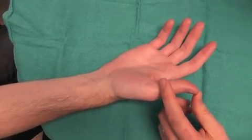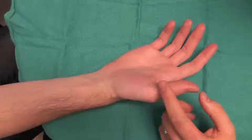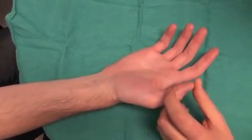The thumb has one primary flexor, which is the FPL, flexor pollicis longus, that bends at the thumb IP joint.